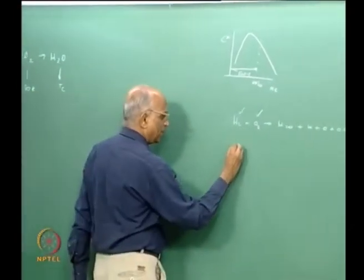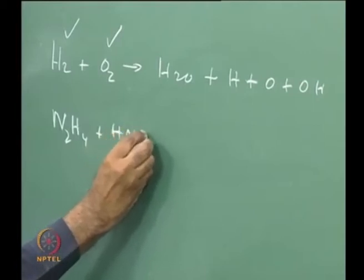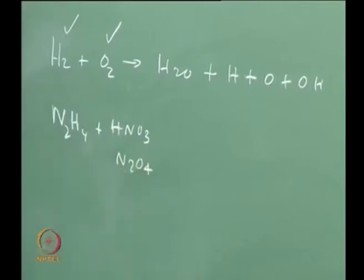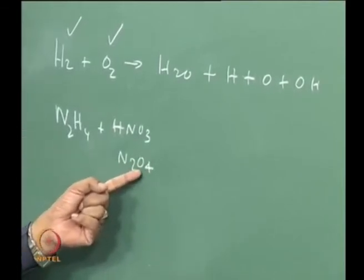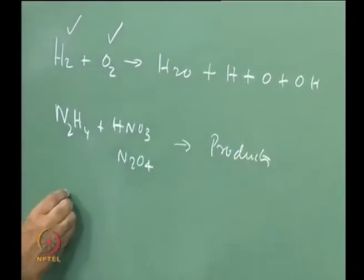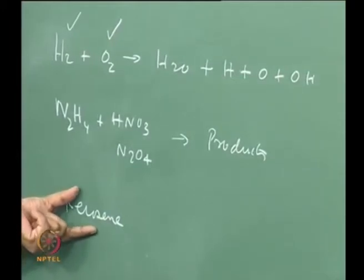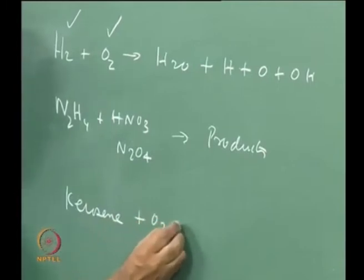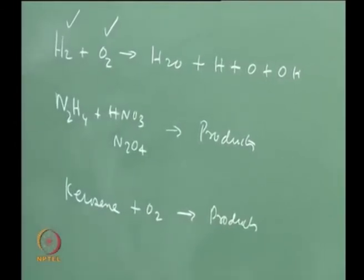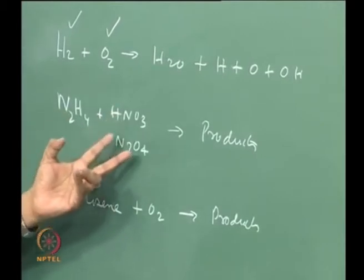Another propellant could be hydrazine N2H4, with the oxidizer being nitric acid HNO3, or better still N2O4, which had a small positive value. Hydrazine and N2O4 is a good combination. We could also think of kerosene, which had a large negative value of around minus 200, combined with oxygen, chosen under fuel-rich conditions. These substances like nitric acid and N2O4 are widely used as oxidizers.